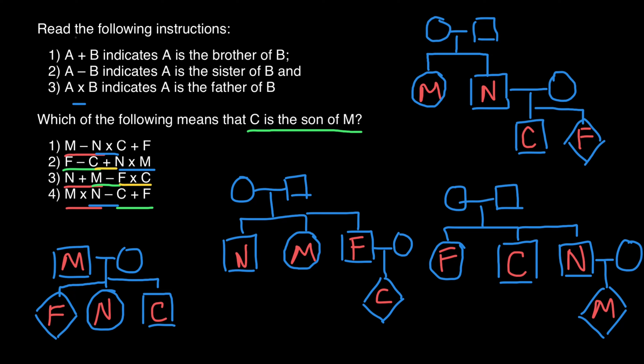Let's check again: which of the following means C is a son of M? From this pedigree, we clearly see that C is male and he is a son of M. So our answer is variant four. That's all for today — subscribe and see you in the next video. Goodbye.